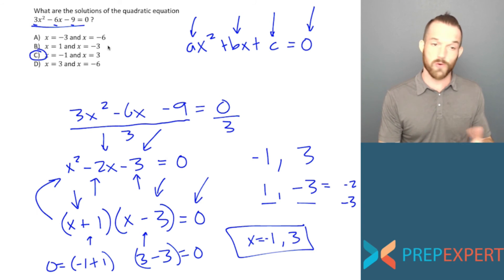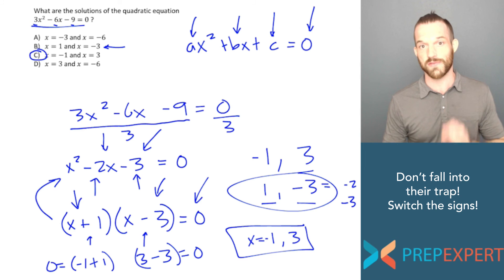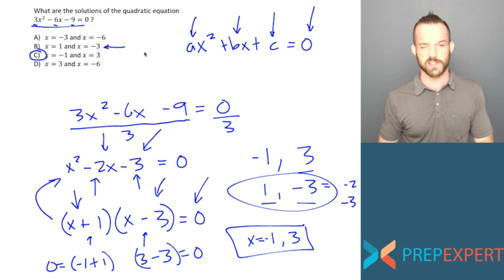Note as well that they'll always offer you an answer choice that will be a trap you'll fall into if you forget to reverse the signs of the factors. If you try and circle the answer that shows you the signs of the factors before you reverse those signs, that will be a trap and incorrect answer almost every time. So make sure you don't forget to reverse the signs of the factors to find the solutions.